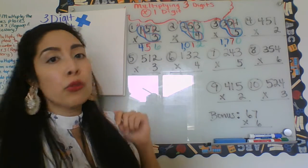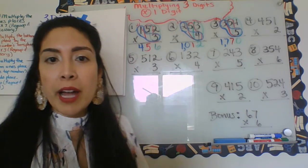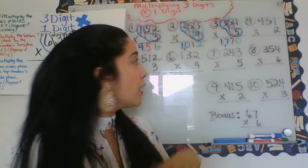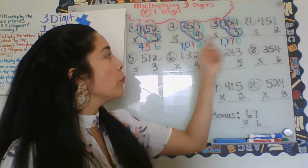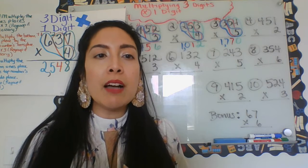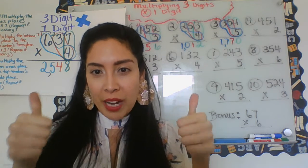Three times one is three, plus one more to regroup is four. Your answer is 456. Number two: was your answer 1012? Number three: was your answer 1770?